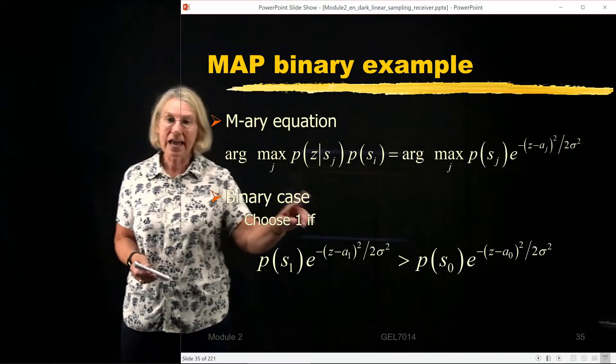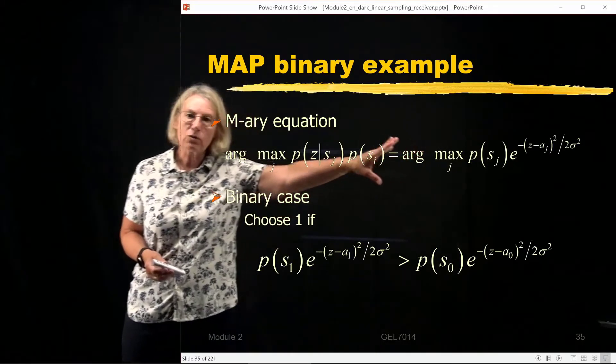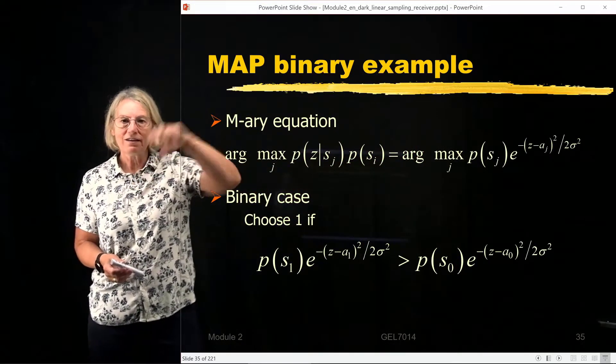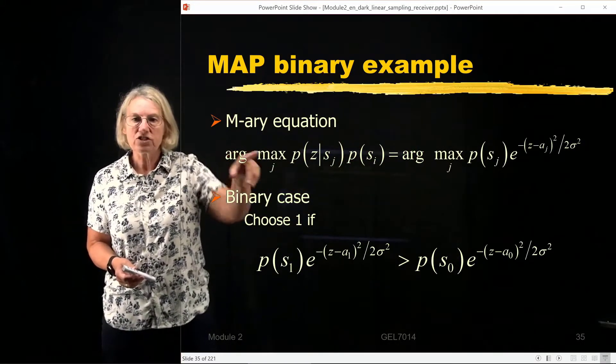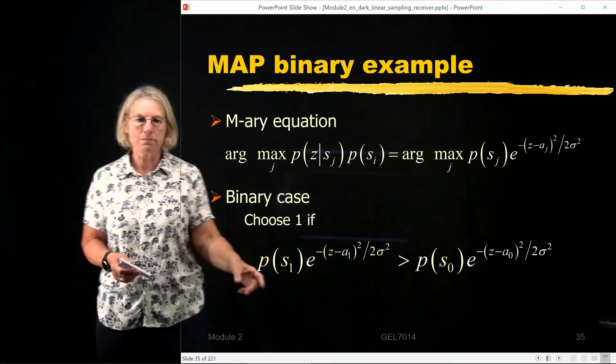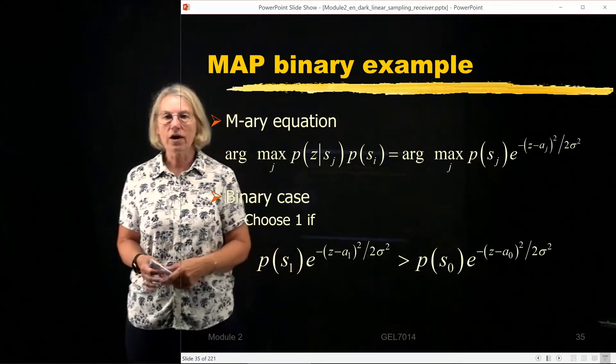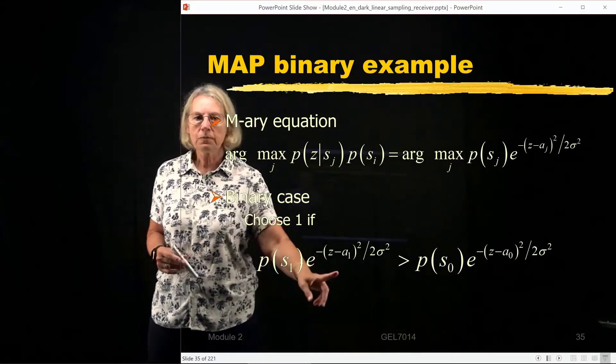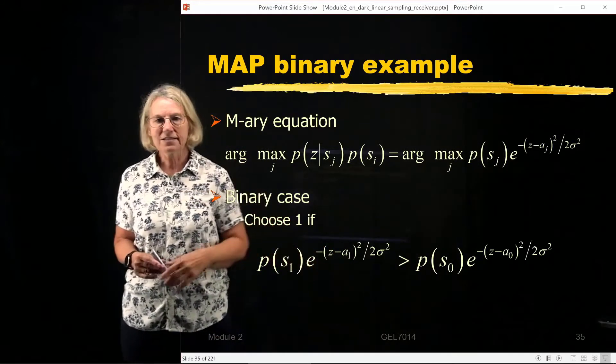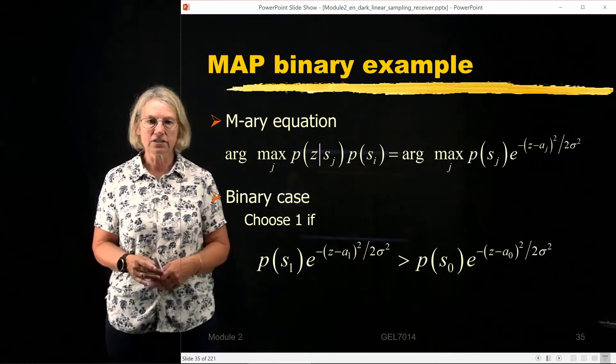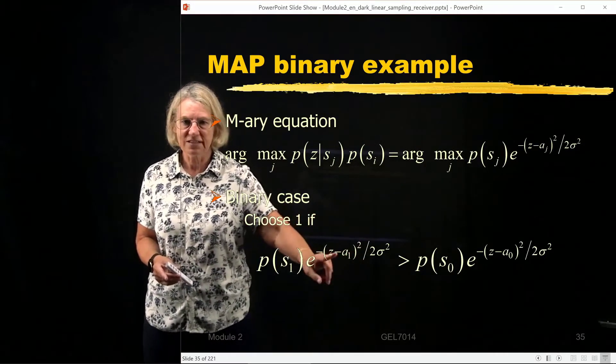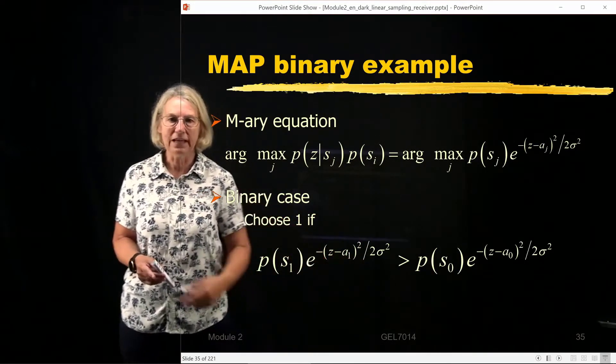If we look at the binary case, this general M-ary equation gets reduced to something quite simple. It's the probability that a 1 will be sent multiplied by the density function, the conditional density function, given that a 1 is sent. So we have the test statistic is shifted by mean A1.